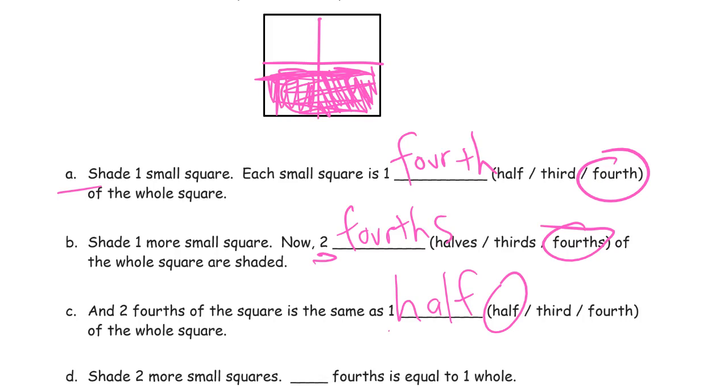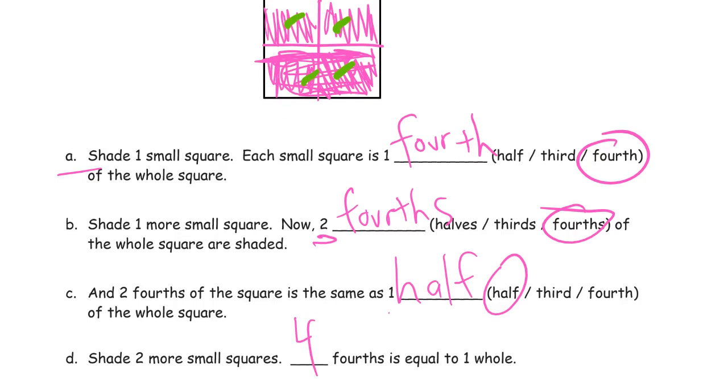Shade two more small squares. Okay. Here. There. And how many fourths is that? That are shaded in now. Well, that's one, two, three, four of them are shaded in now. So it's four fourths. Four fourths is equal to one whole. And that's not like a hole like a hole in the ground, but W-H-O-L-E. Like the whole thing. Put all the parts together and make a whole.